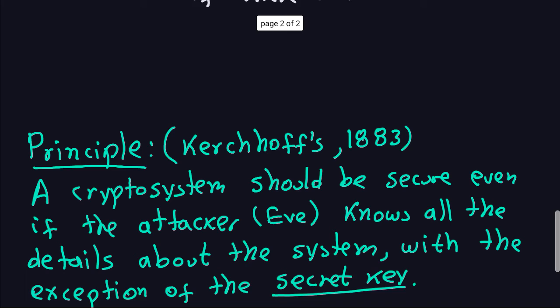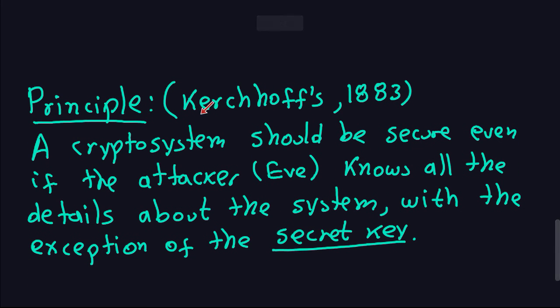And this is Kerckhoffs's principle. He made this principle in 1883, and I'm just going to read it because this is very important: A crypto system should be secure even if the attacker—in this case, Eve—knows all the details about the system. So they know the encryption algorithm, the decryption algorithm, all the details with the exception of the secret key.